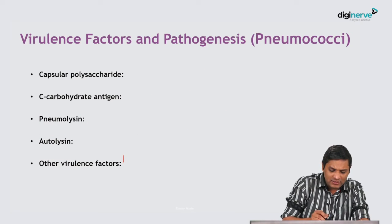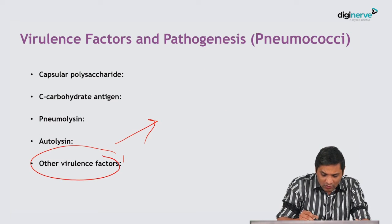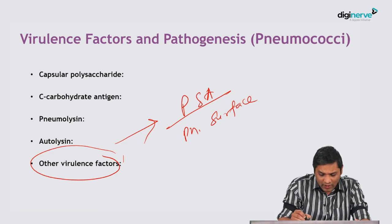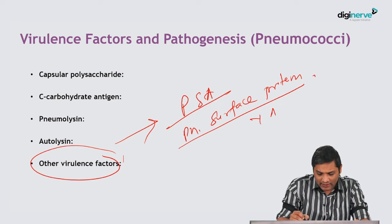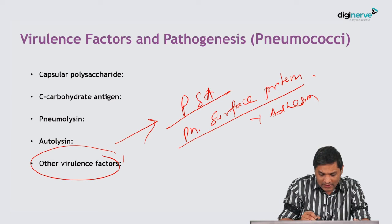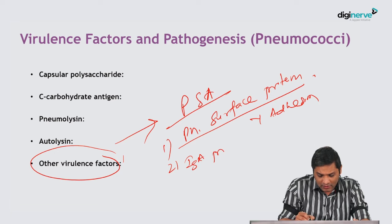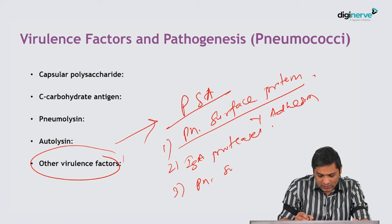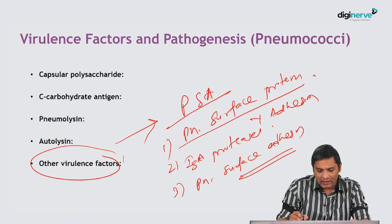Various other virulence factors of pneumococcus include PSA (pneumococcal surface protein), which helps in adhesion, IgA proteases, and pneumococcal surface adhesin. All these are various virulence factors of pneumococcus which contribute to its pathogenesis.